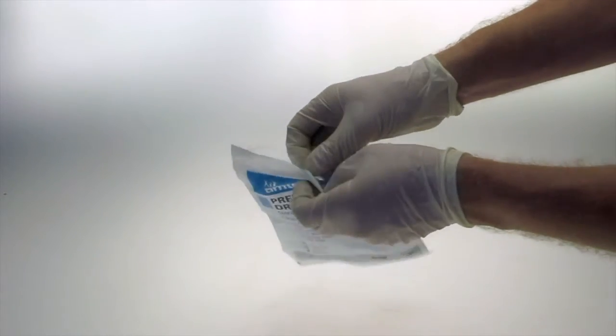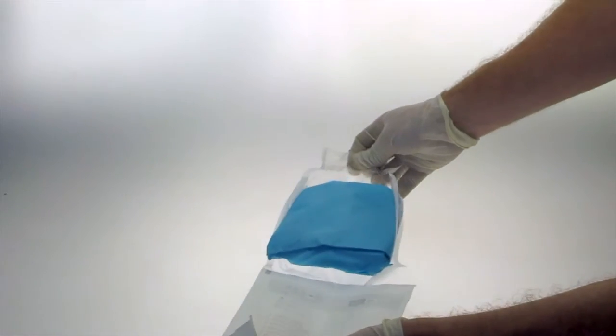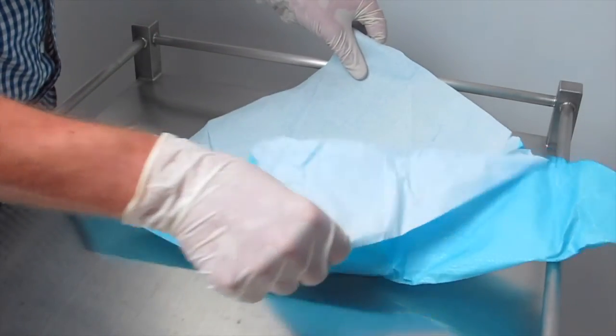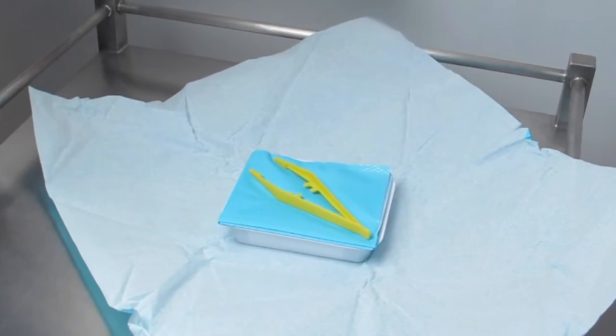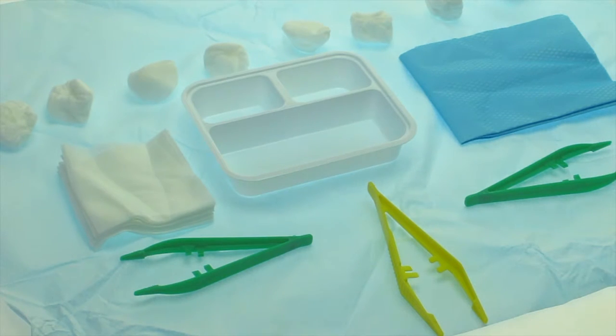The sterile plastic pouch is easy to peel open. It contains a tray, eight gauze balls, five non-woven swabs, three plastic dissecting forceps, one wrapping sheet, and a plastic field.